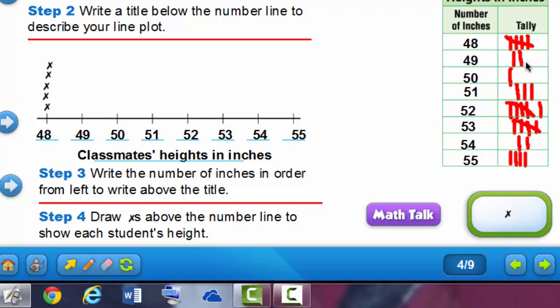Now we have 1, 2, 3, 4, 5 X's above the 48. Let's look at the 49. How many X's need to go above the 49? That's right, 2 because 2 students were 49 inches. How many were 50 inches?